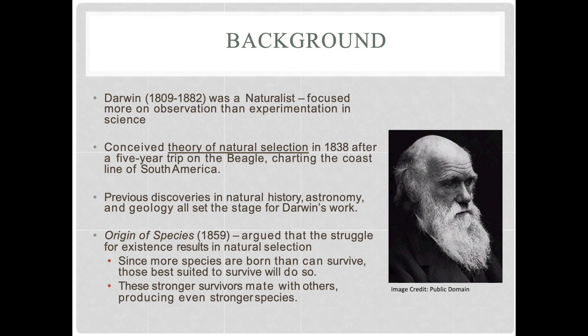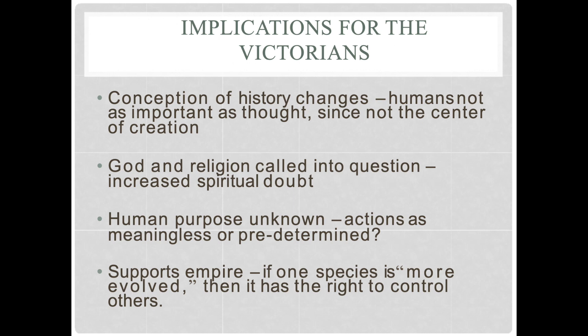This overview of Darwin is very simplistic, and we're only looking at a small snapshot of his argument because we're not talking about it in terms of scientific history. We're talking about how this idea of the survival of the fittest impacted the literary movements happening in the 19th century. If you want a deeper understanding of Darwin, you should look to science classes instead of literature classes. We're just looking at what Darwin did in terms of literary movements.